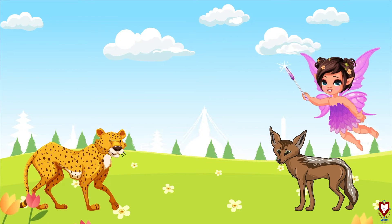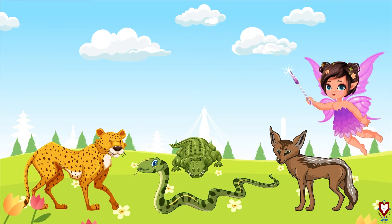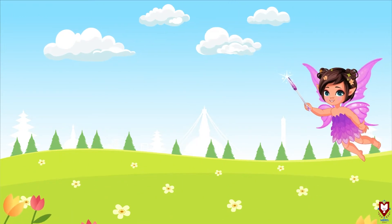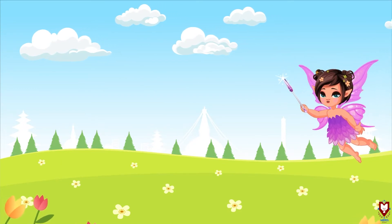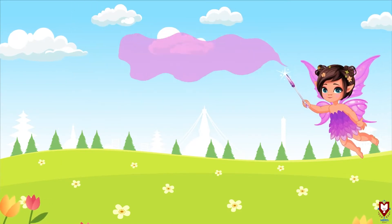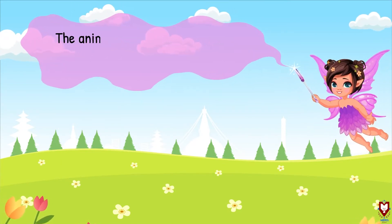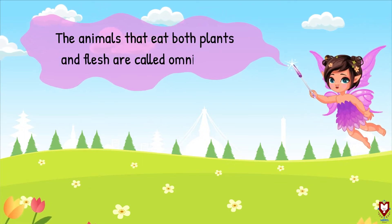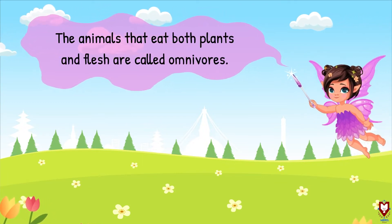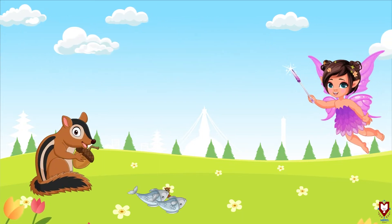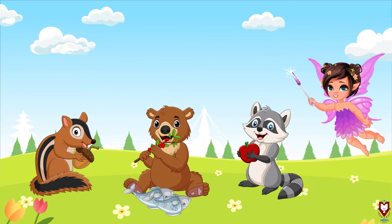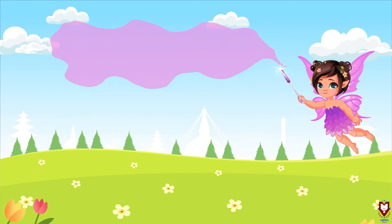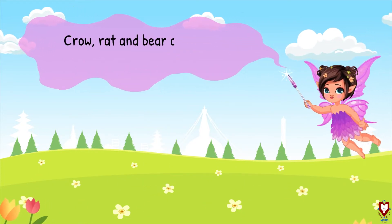Now the last type of animal is omnivores. The animals that eat both plants and flesh are called omnivores. Both birua ra masu dubai khane animals lai omnivores panincha. Crow, rat, and bear are some examples of omnivores.